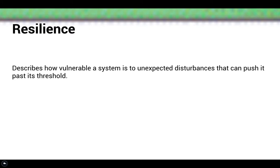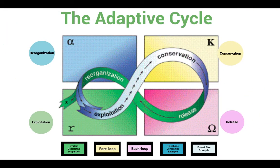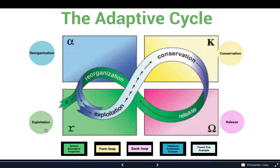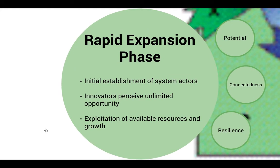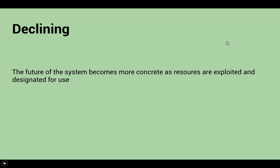We'll use these key properties to examine the unique defining characteristics of each phase in the adaptive cycle. We'll start with the exploitation phase, which is also commonly known as the growth phase. This phase is characterized by rapid expansion — actors in the system are just beginning to be established and the opportunities appear limitless. Resources are exploited at an exponentially high rate in order to take advantage of all the opportunities being presented. The R phase is characterized by a declining potential for future change, as the exploitation of resources limits the future possibilities for the system.